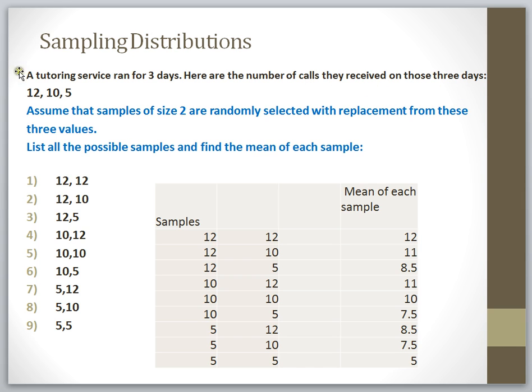On day one, they got 12 calls. Day two, they got 10 calls. Day three, they got 5 calls. This is the entire population of possible calls that that service got. So even though it's a tiny population, it's their entire population.